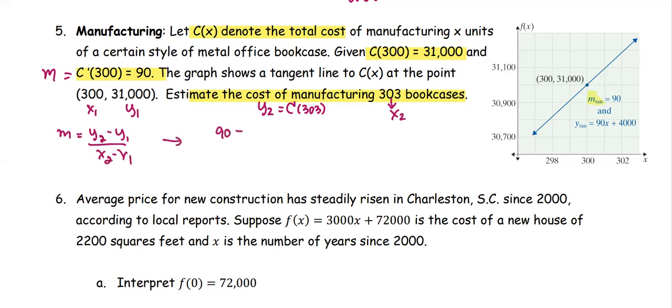The m is 90, which equals y₂, the cost at 303, where y₁ is the cost at 300, divided by x₂ - x₁, or 303 minus 300.